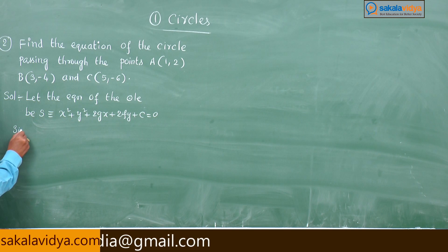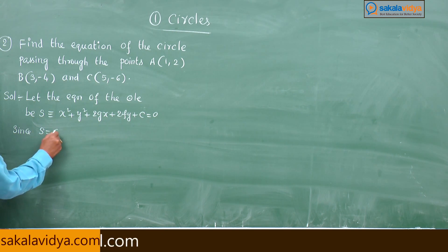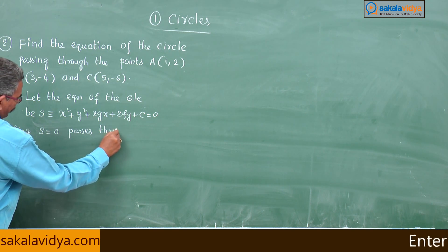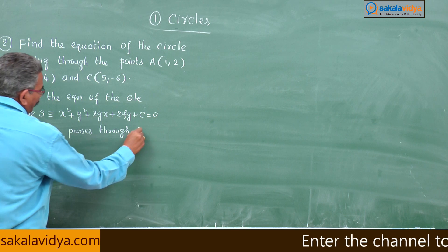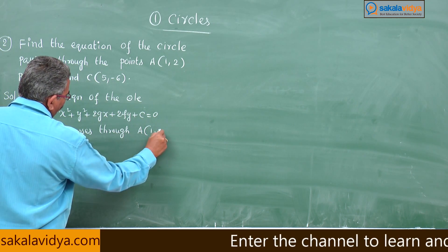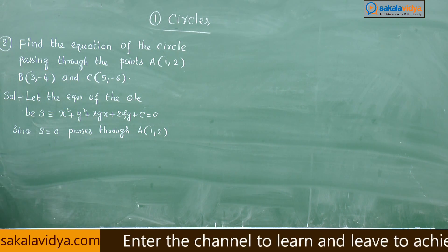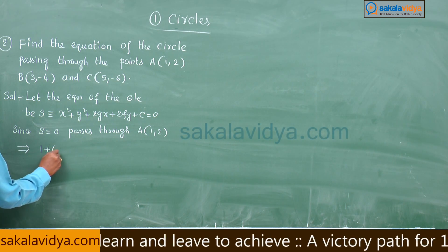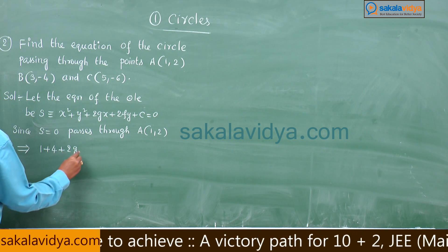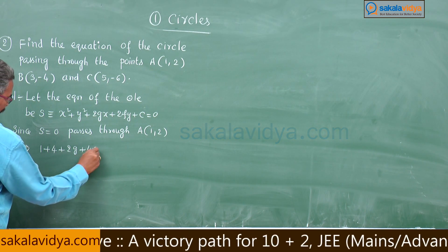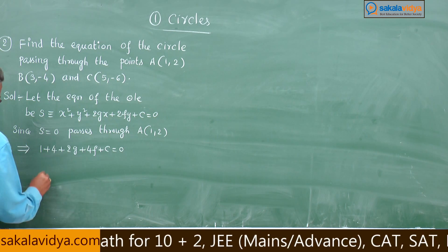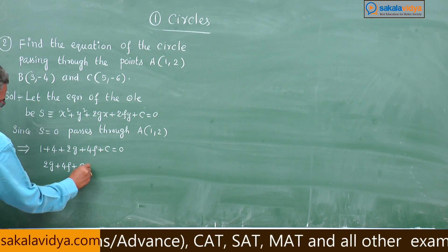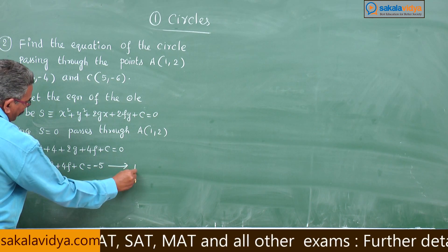Since S = 0 passes through A(1, 2), the point should satisfy S = 0. So that means 1 + 4 + 2g + 4f + c = 0, which gives 2g + 4f + c = −5. Say equation 1.